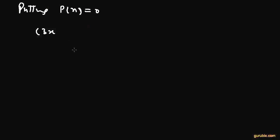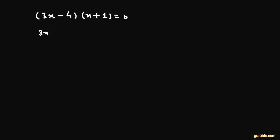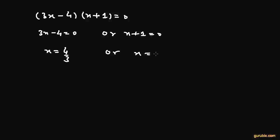Now we set p(x) equal to 0, giving us (3x minus 4)(x plus 1) equals 0. This means 3x minus 4 equals 0, or x plus 1 equals 0. Solving these: x equals 4 over 3, or x equals minus 1. So these are the two zeros of the given polynomial p(x).